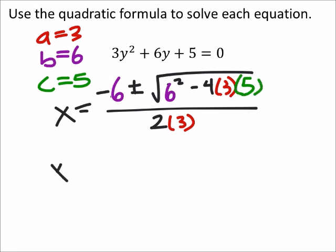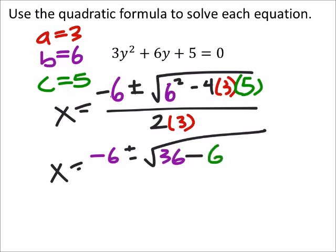And then the C value we'll replace with 5. So, it looks like X is negative 6 plus or minus the square root of 36 minus 4 times 3 is 12 times 5 is 60. And this is all over 2 times 3, which is 6.